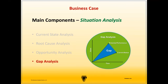Some of the most common methods used for a business case include internal rate of return, the net present value, the payback period, or the return on investment. The internal rate of return calculates the annual rate of growth at which an investment breaks even and generates returns. It represents the discount rate at which the net present value of all future cash flows from the investment equals zero. A higher internal rate of return value indicates more desirable investment opportunities.